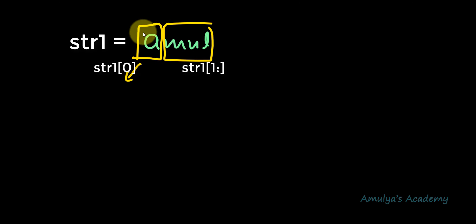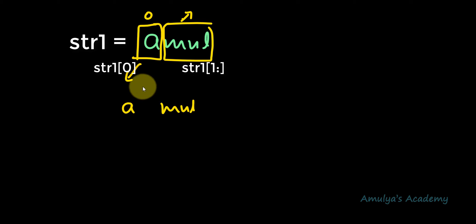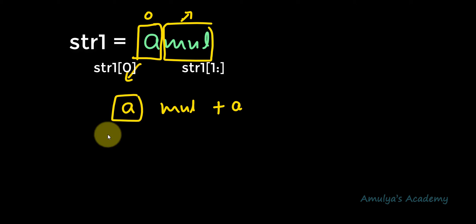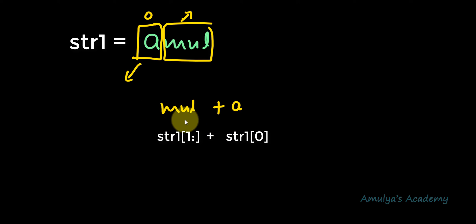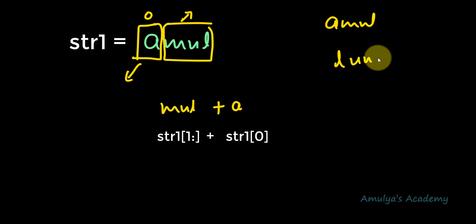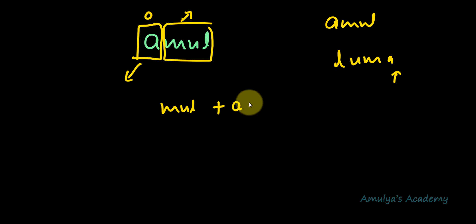For example, take the string 'amul'. I will split the input string into two parts: the character at index 0, and the characters from index 1 onwards. So 'a' and 'mul' become separate. Then I concatenate 'a' at the end of the substring 'mul', placing it at the end. Now 'a' is treated as reversed — it comes at the last position, which is correct for reversing 'amul'.